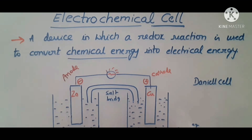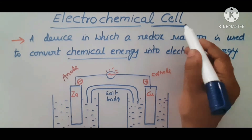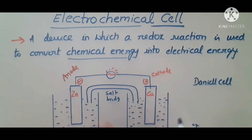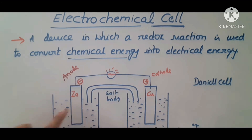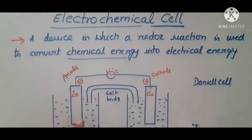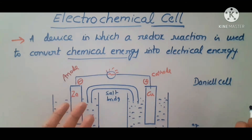Students, today's topic is electrochemical cell. First, let's see what is a cell. When an electrode is dipped in its own electrolytic solution, then electrolysis will happen, and thereby you can have electricity.